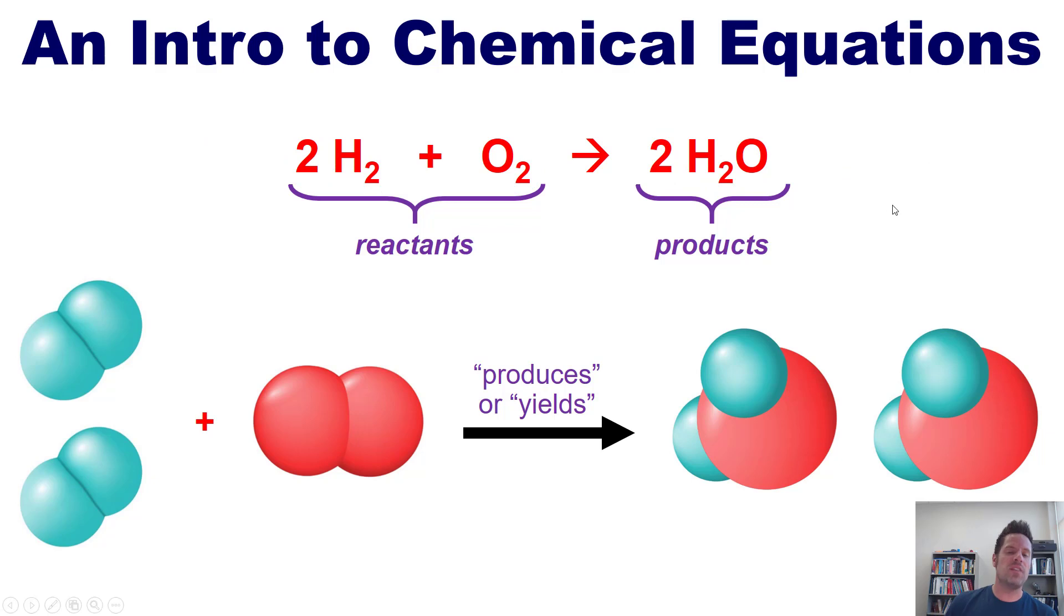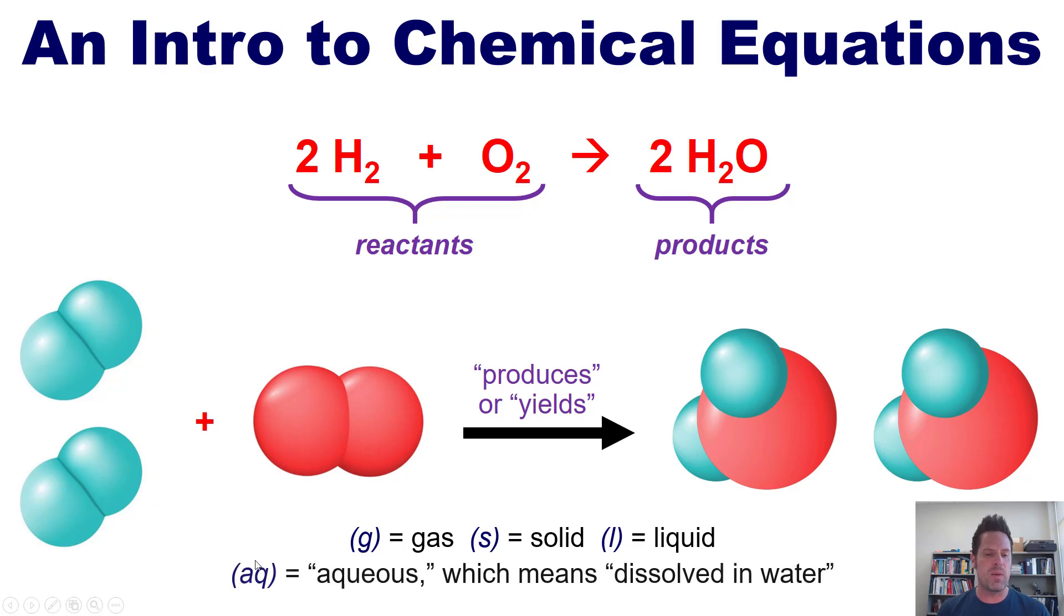Additional details. Oftentimes in chemical equations like this, we also include information about the physical state or states of each reactant and product. We write down the letter G in parentheses to indicate if the substance is a gas, an S in parentheses to indicate if it's a solid, and an L in parentheses to indicate if it's a liquid. Separately, we write down AQ in parentheses to indicate if the substance is aqueous, which means that that substance is dissolved in water.